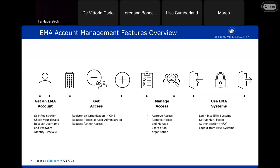After you are able to get access to one of the EMA systems, you can consume them. The first step to access these services is of course logging in, and more and more we are relying on modern authentication. You can set up your multi-factor authentication, add or remove methods, and log out from your EMA system. These are all the features that we offer across the IAM landscape and specifically from EMA Account Management.